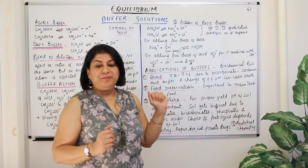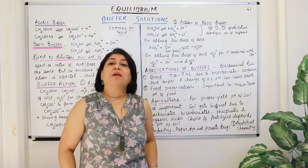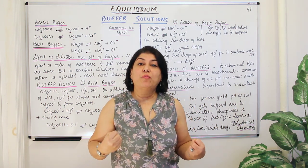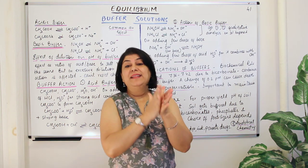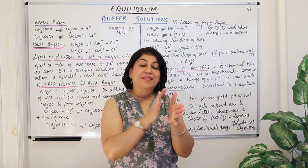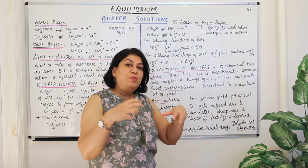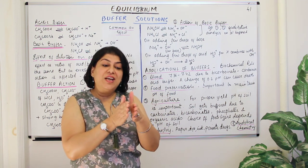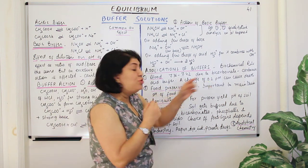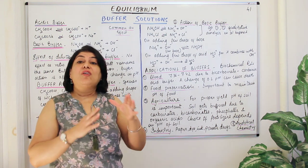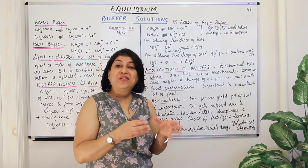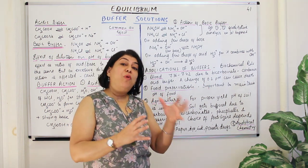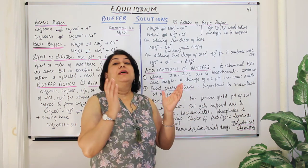The most important natural application of buffers is that all fluids in our body — especially blood — have a fixed pH and act as buffers. The human body and all organisms can function only within a certain pH range. A change in blood pH of as little as 0.2 can cause the death of an organism, which shows how critical it is to maintain the pH of body fluids.